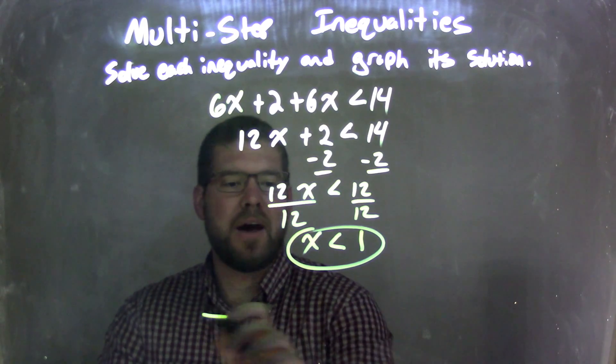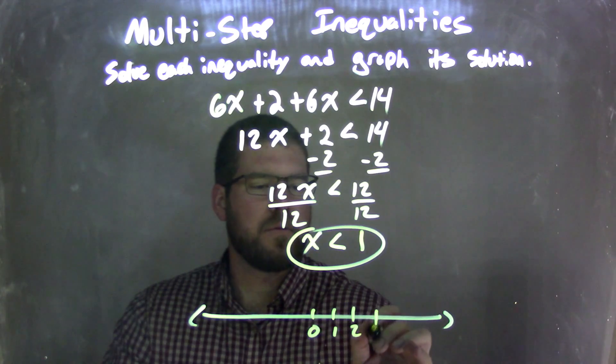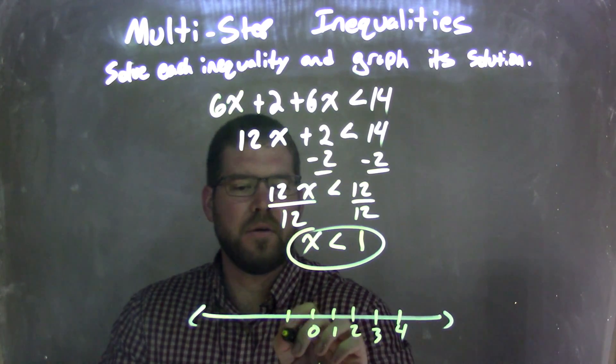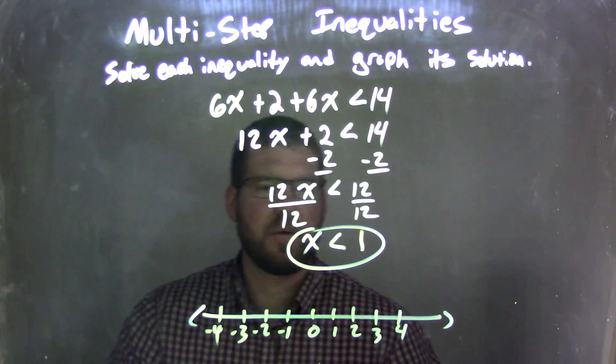So now I need to graph it. Graphing it here, 4, negative 1, negative 2, negative 3, and negative 4, okay?